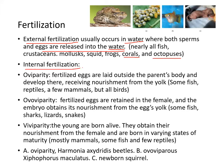Internal fertilization includes oviparity, where fertilized eggs are laid outside the parent's body and develop there, receiving nourishment from the yolk. This includes some fish, reptiles, and a few mammals, but all birds use this method.